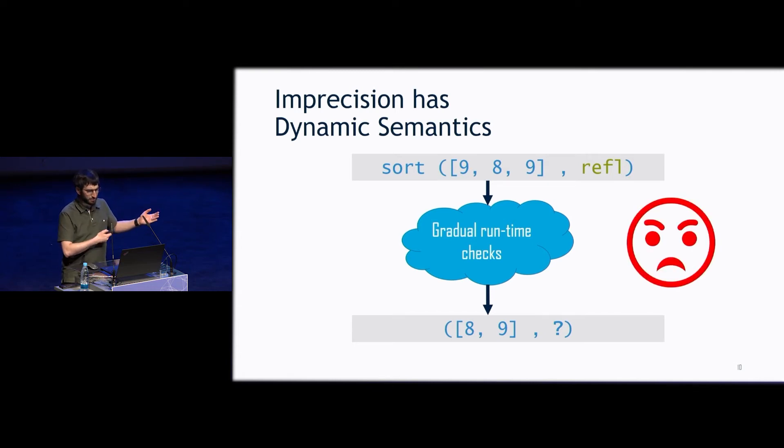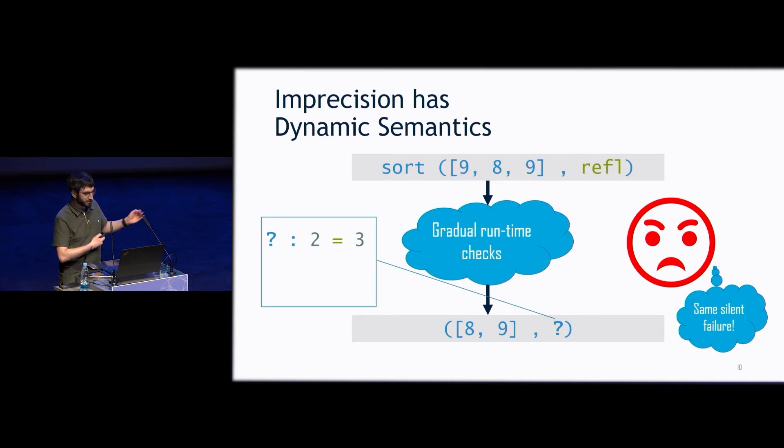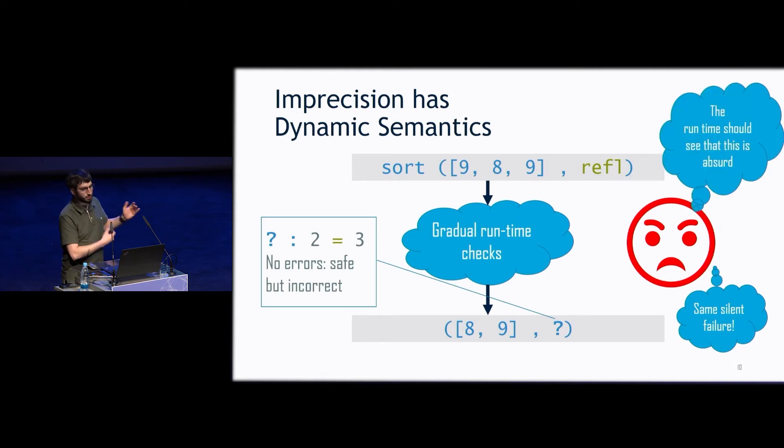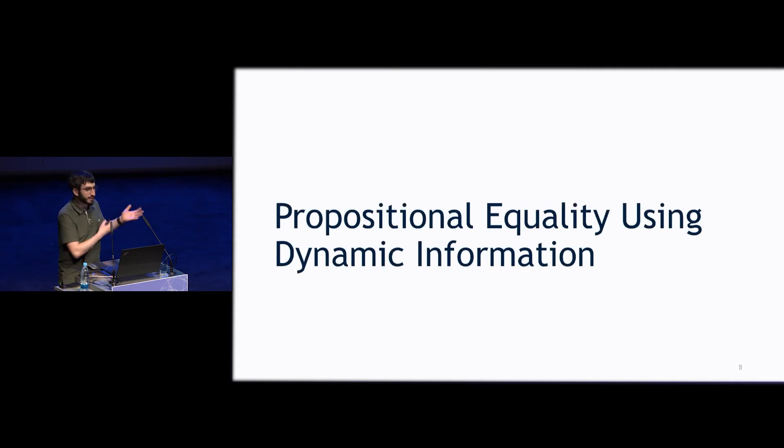Except they're not happy because we haven't gained anything over the non-dependently typed version that we started with. We have the same silent failure. We just got this question mark out at the end as our proof. And what's strange is that question mark ends up, in this case, having the type 2 equals 3. And the runtime said, well, I'm not going to throw an error. I was able to run safely. You never took the head of an empty list. You never accessed unallocated memory. But that type is absurd. And wouldn't it be great if the runtime could see that this equality can't ever be inhabited and notify the user of that? And that's exactly what we've designed with our gradual propositional equality.